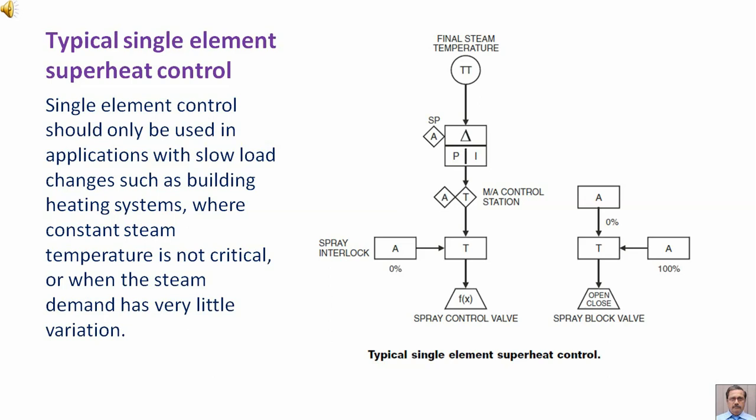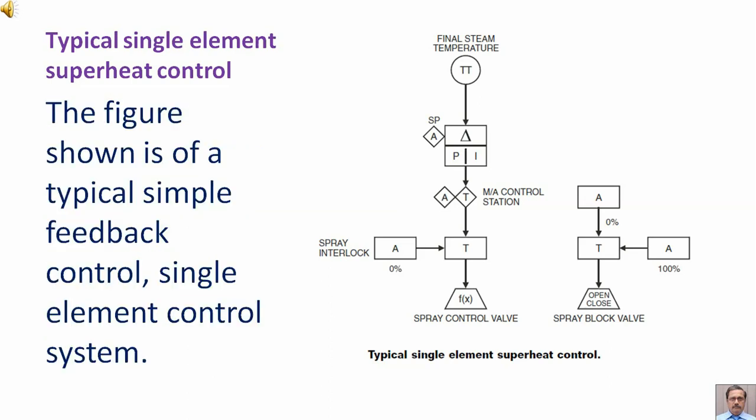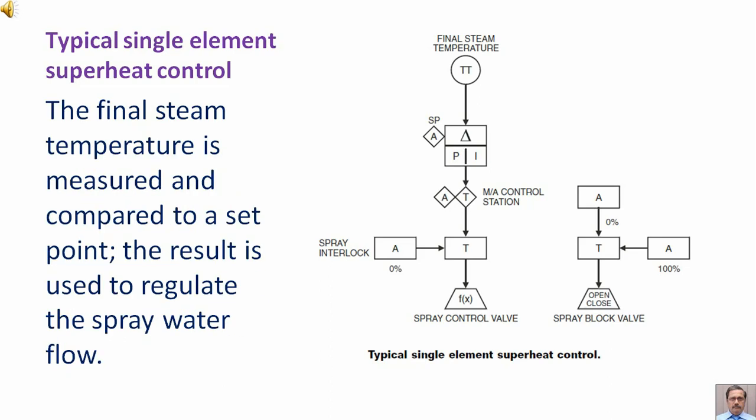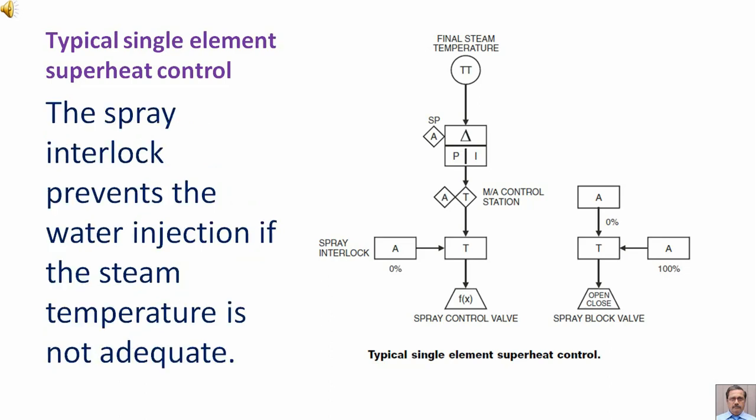Single element control is also suitable when steam demand has very little variation. In a typical simple feedback control system, the final steam temperature is measured and compared to a set point, and the result is used to regulate the spray water flow. A spray interlock prevents water injection if the steam temperature is not adequate.